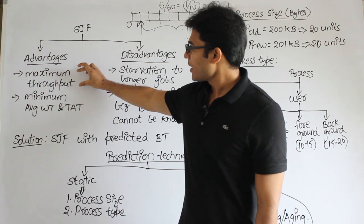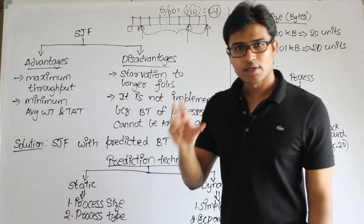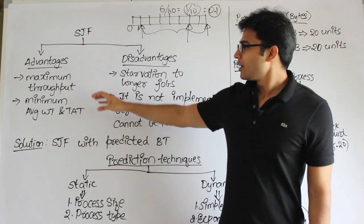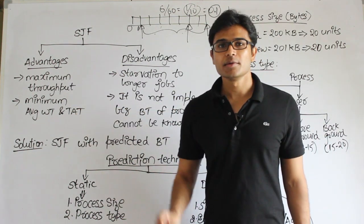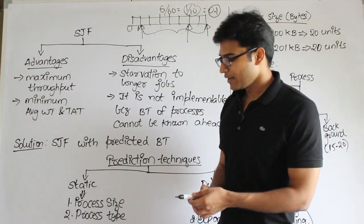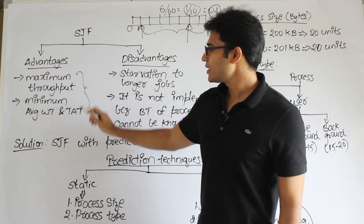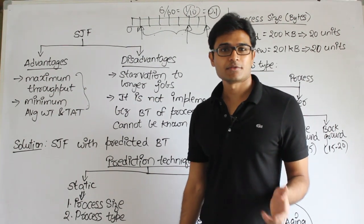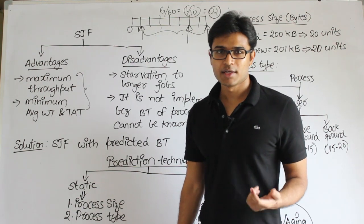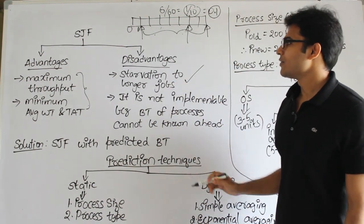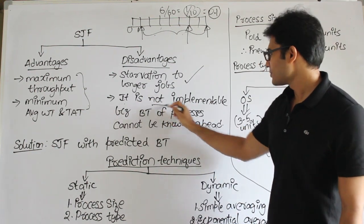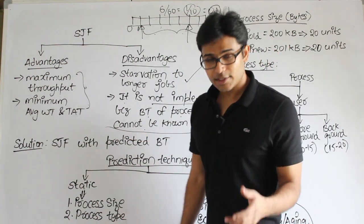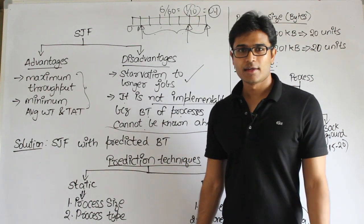Therefore SJF has maximum throughput and minimum average waiting time and turnaround time. These are the two key characteristics required by any scheduling algorithm. So SJF is the best scheduling algorithm possible. But the problem with it is starvation for longer jobs, and more critically, it is not implementable because burst times of processes cannot be known ahead of time.